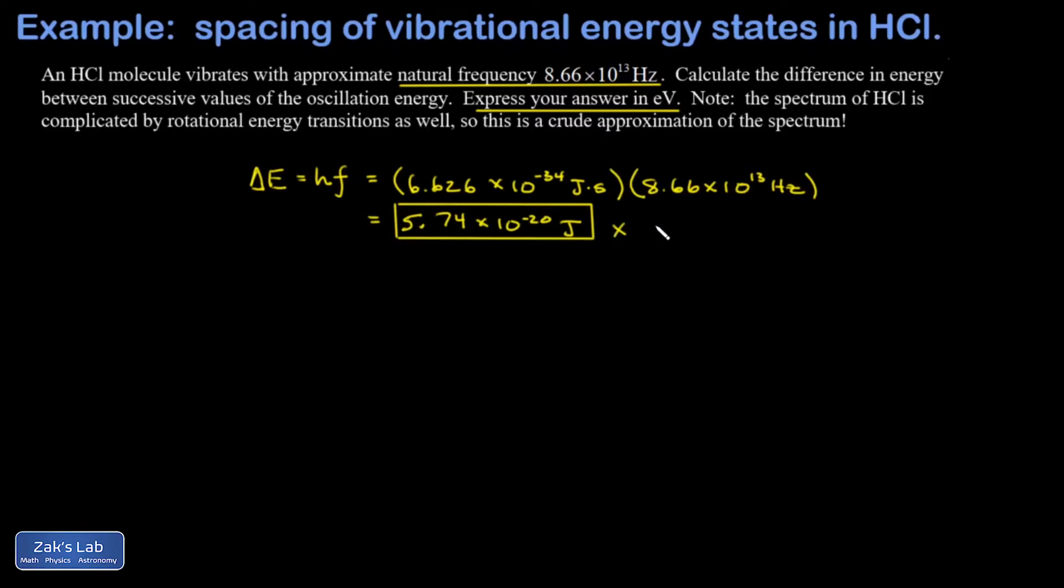Next, we're going to convert that to electron volts. We multiply by a conversion factor: one electron volt equals 1.6×10^-19 joules. This is the potential energy difference for one electron passing through a one volt potential difference. Joules cancel out and we get 0.359 electron volts for the spacing of vibrational energy levels in this molecule.